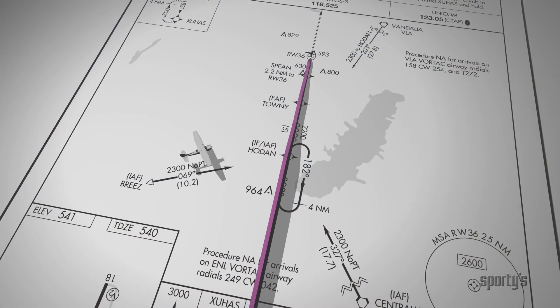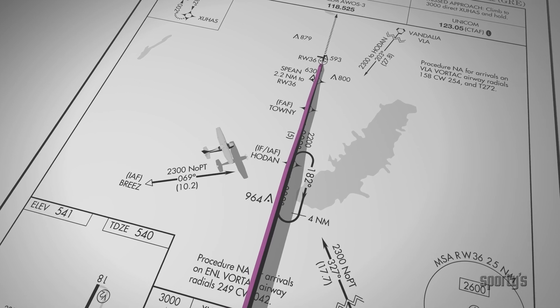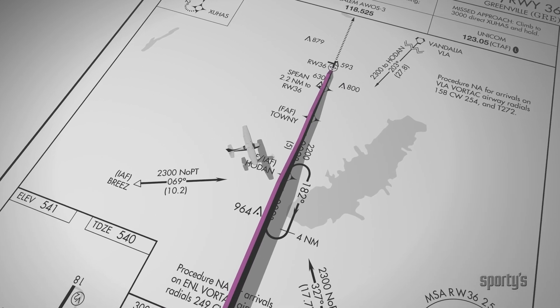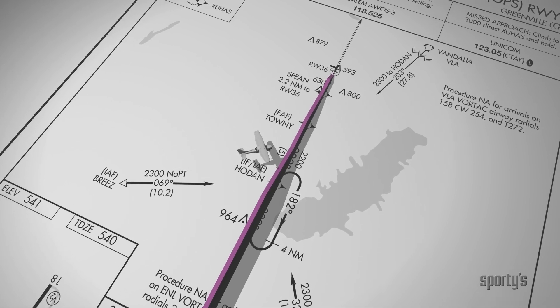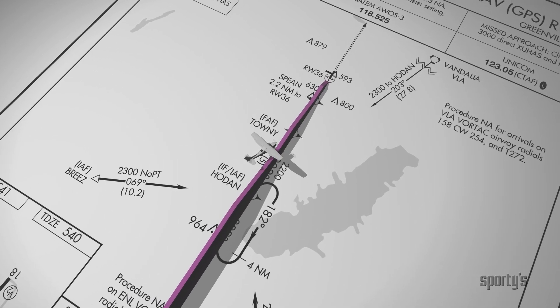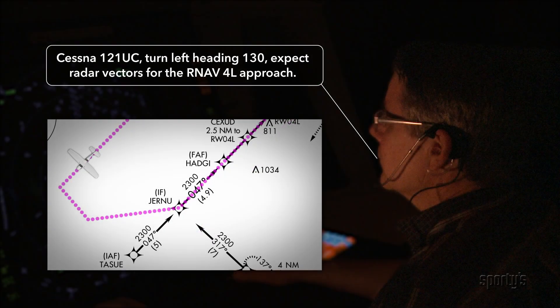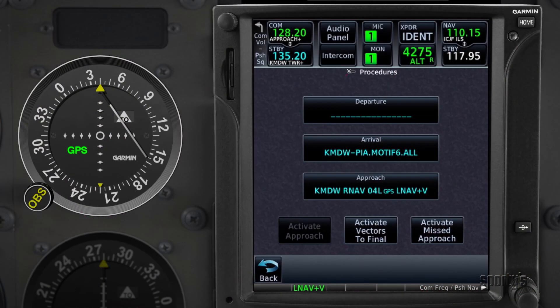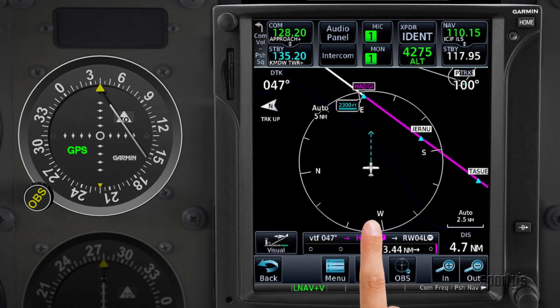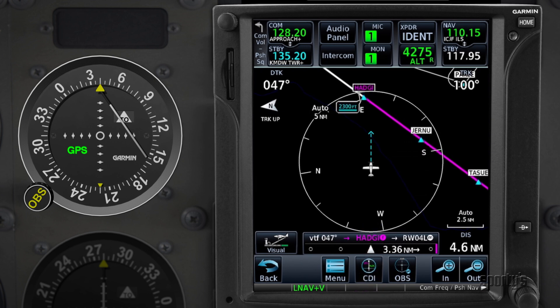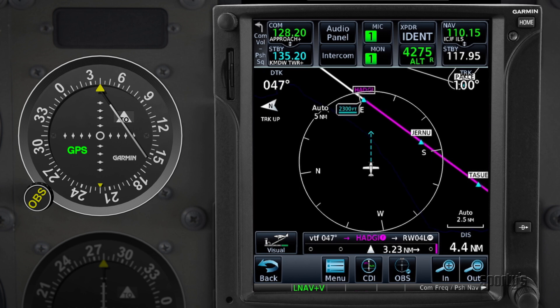Most GPS approaches will begin with a vector from ATC, as the controller sets you up to intercept the final approach course a few miles outside the final approach fix. That means you'll be assigned a heading and told it's vectors for the RNAV approach. When you hear that phrase, make it a habit to activate vectors to final mode on your GPS. This will draw an extended final approach course on the map and highlight the final approach fix, making it easy to visualize where you are in relation to the runway.